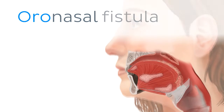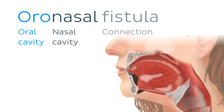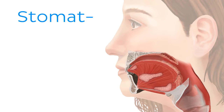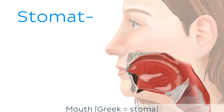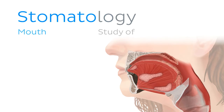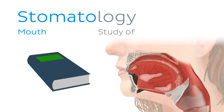You'll see it used in terms like oronasal fistula, which is an abnormal opening or connection between the oral and nasal cavities. Another root word sometimes used for mouth, which comes from the Greek, is 'stoma' or 'stomat' or 'stomato' with the O at the end, such as stomatology, which is the study of the structure, functions, and diseases of the mouth. We'll also see a different use for this term later in this tutorial.